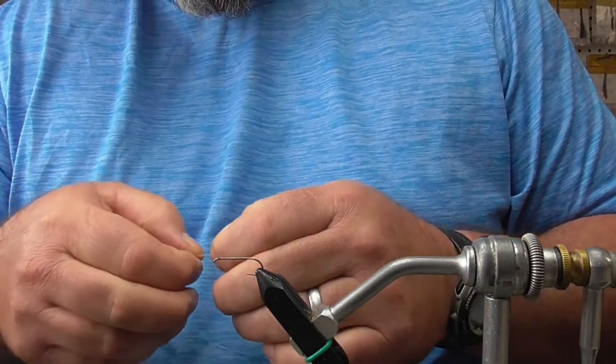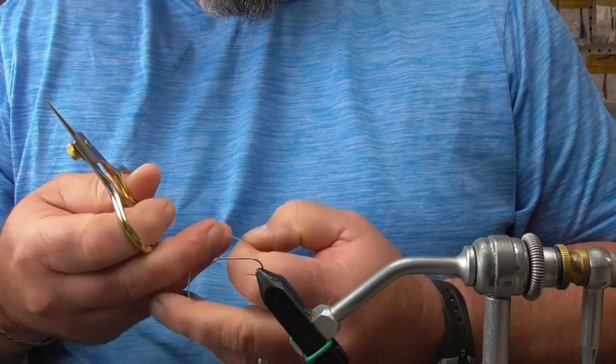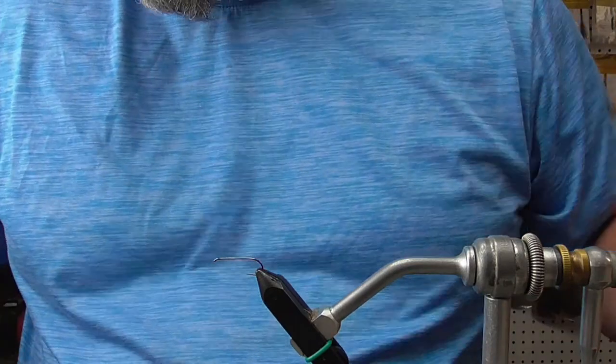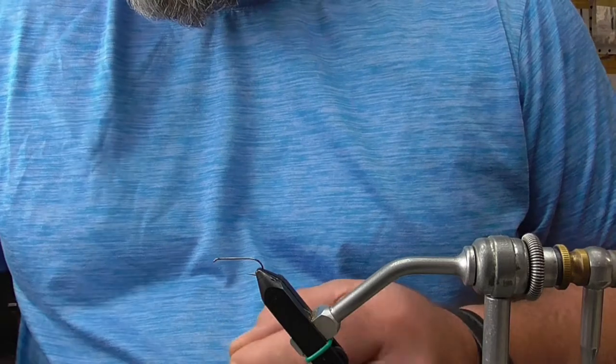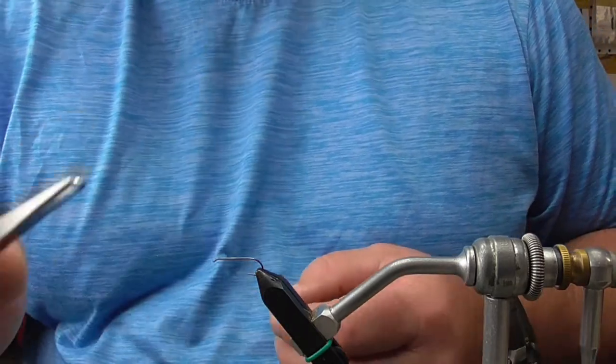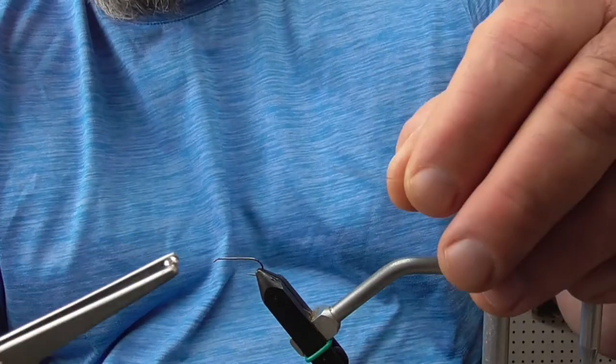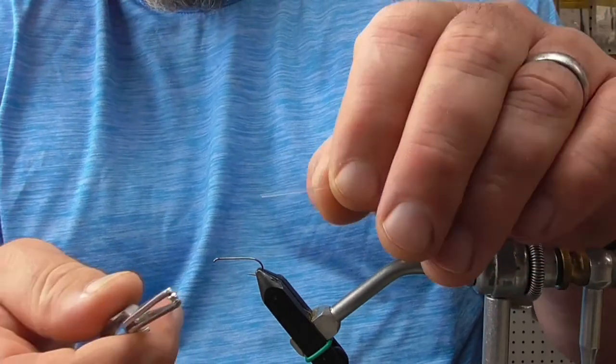Then I'm going to trim that off on the other end so that we've got just about an inch to work with. The next thing I'm going to do is I'm going to grab this 2.7 millimeter Big T tungsten countersunk ball bead.